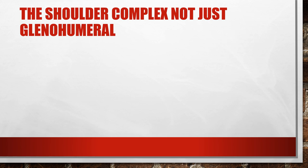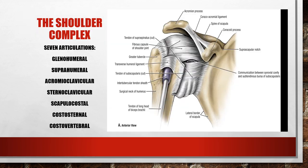The socket becomes deepened through the labrum — it deepens it 75% superiorly to inferiorly and 57% anterior to posteriorly. The shoulder complex actually has seven articulations: the glenohumeral joint, the suprahumeral joint (above the glenoid cavity and below the acromion process), and the acromioclavicular joint between the acromion process of the scapula and the clavicle.